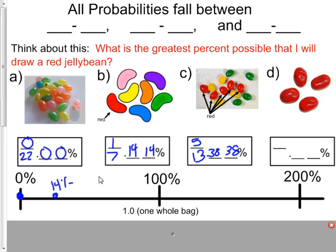So again, if this is 50 and this is 14, we'll say right about here. And last but not least, the highest percent of red we could possibly have is if they are all red. So let's take a look at this example.